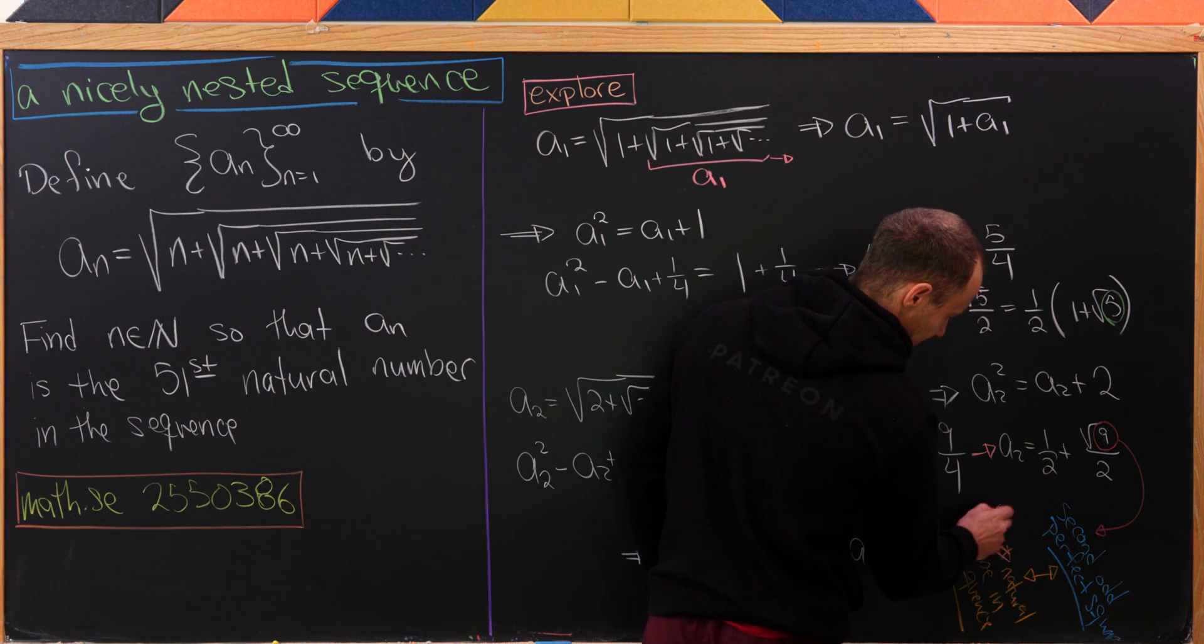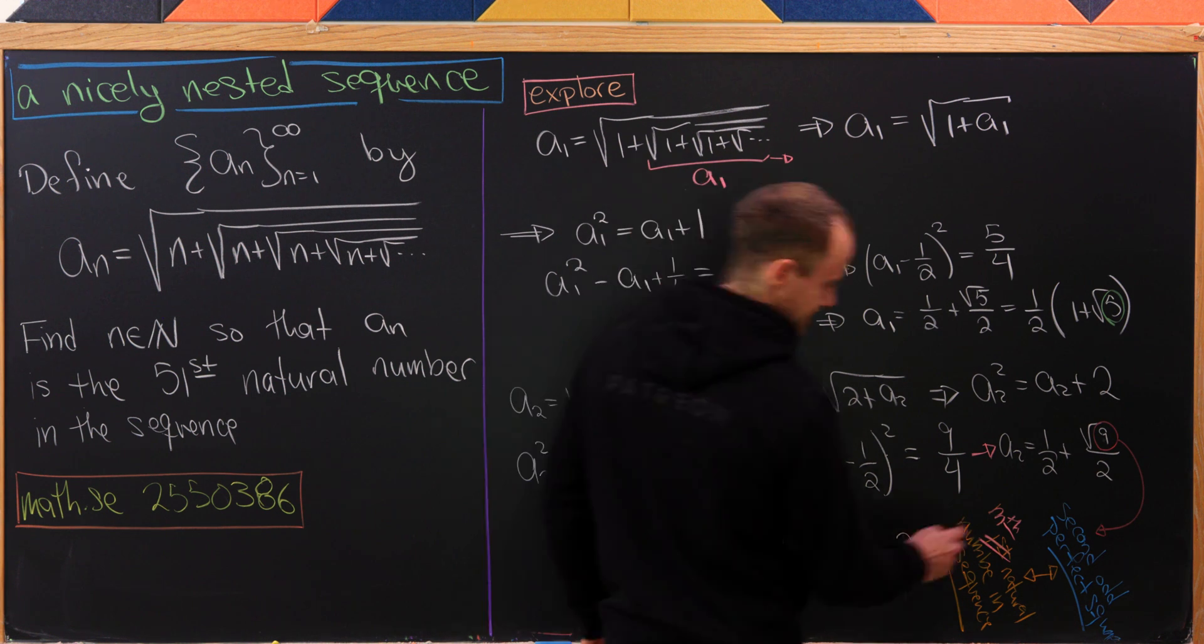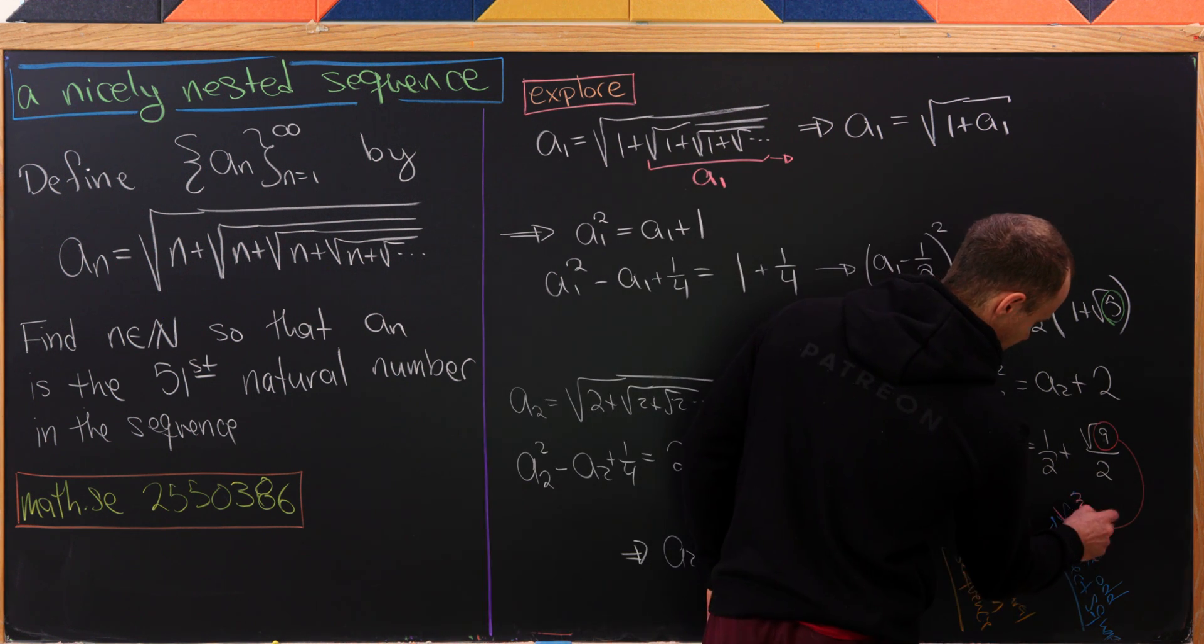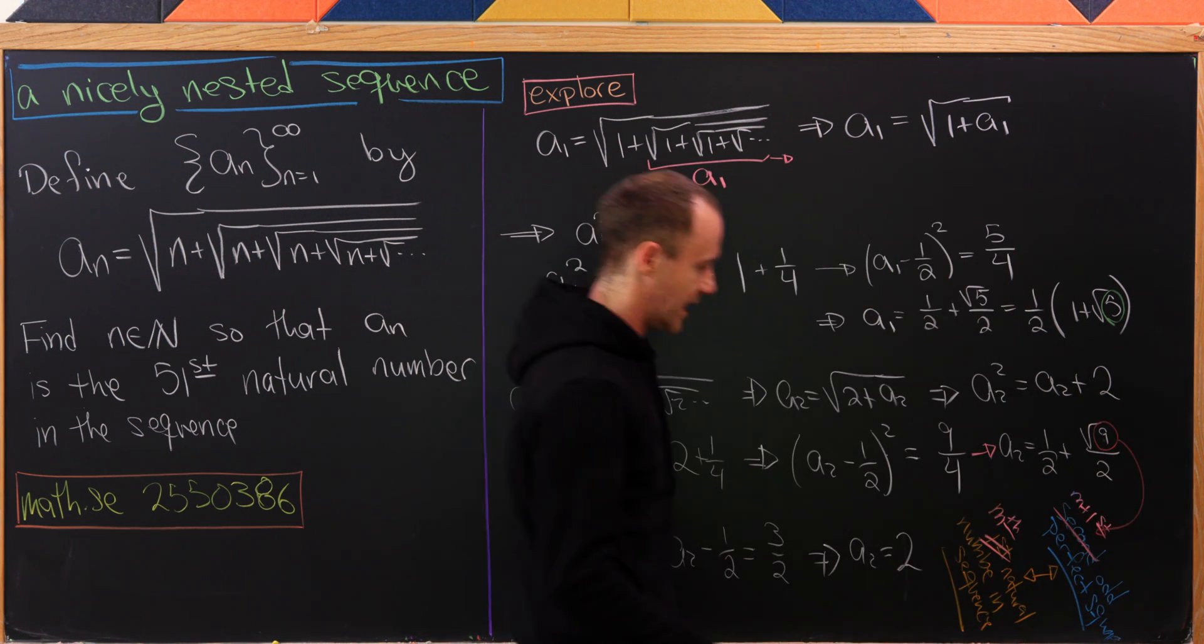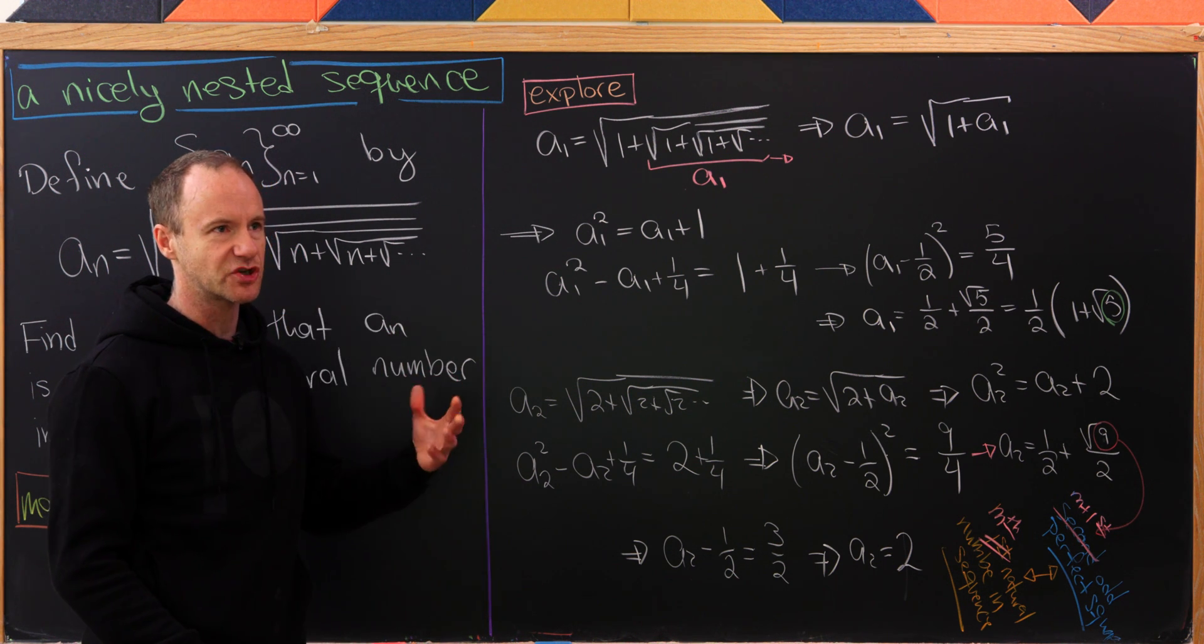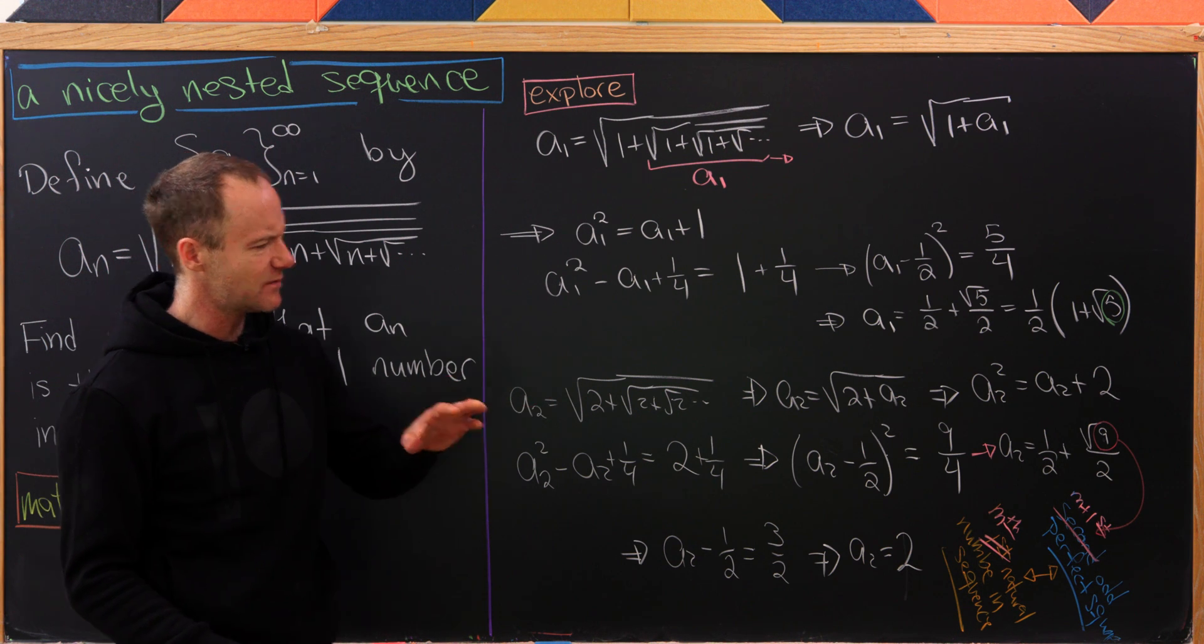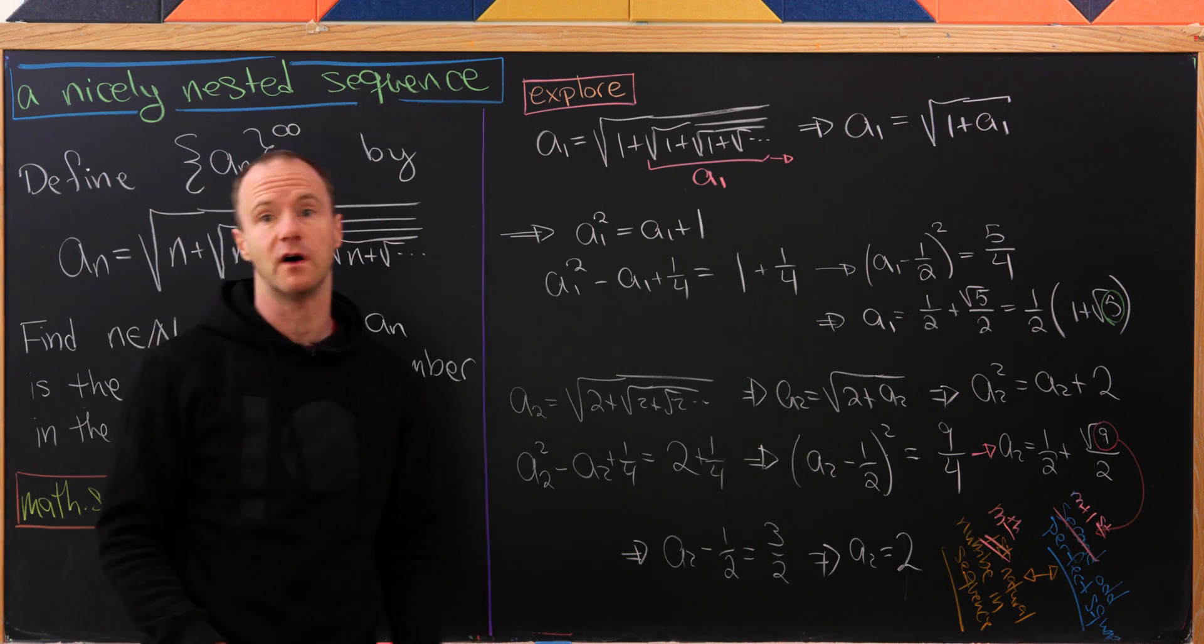I think there's a pretty clear generalization here: if we want the nth natural number in this sequence, then we need the (n+1)st odd perfect square. We won't prove that because during our general solution that will come out for free. Let's summarize this and move on.